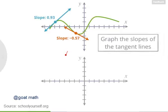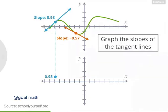What we're going to do next is make a second graph down here, and we'll be graphing the slopes of the tangent lines from the top graph. For example, the tangent line for this x coordinate over here has a slope of zero point nine three. So for this same x coordinate on the bottom graph, let's plot a point with a y coordinate of zero point nine three. Its tangent line has a slope of minus zero point five seven, so at this x coordinate in the bottom graph, let's plot a point with a y coordinate of minus zero point five seven.